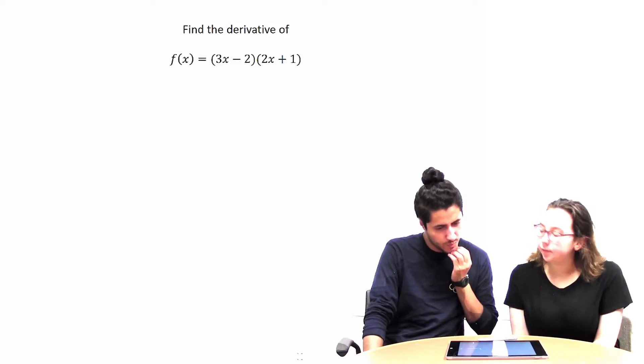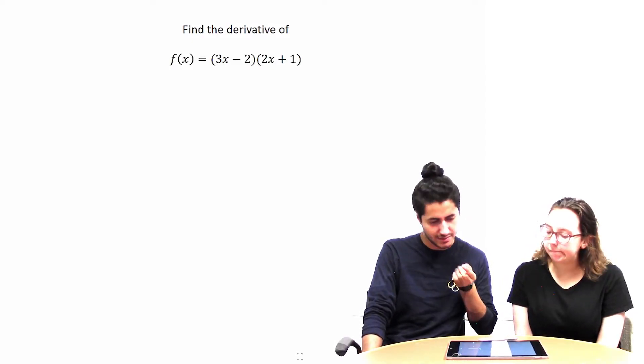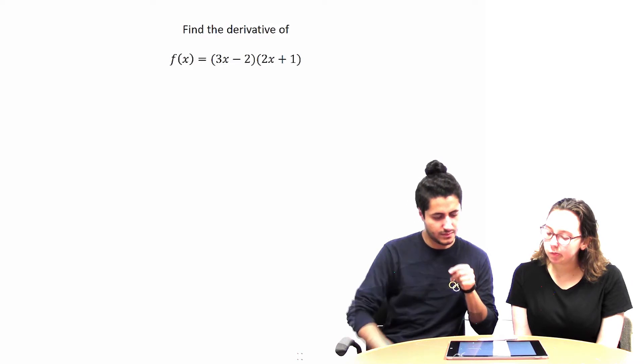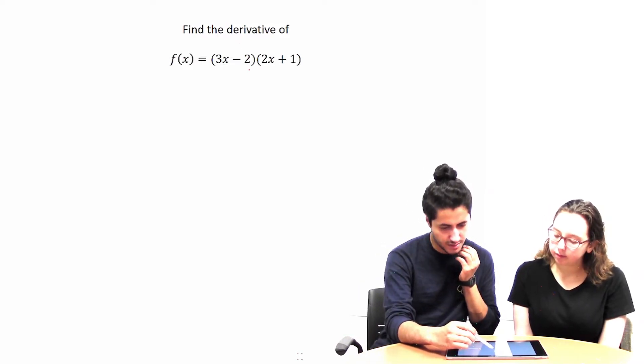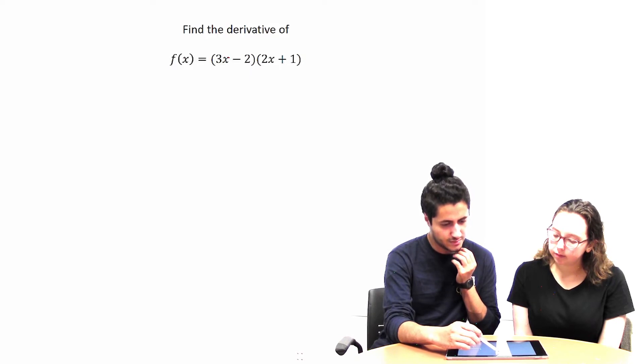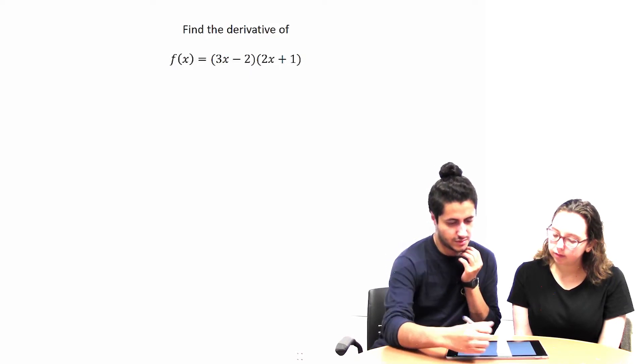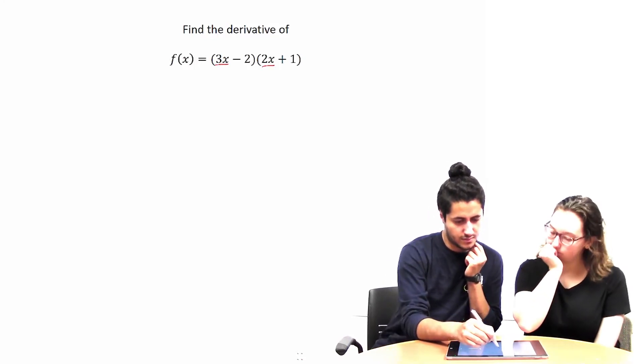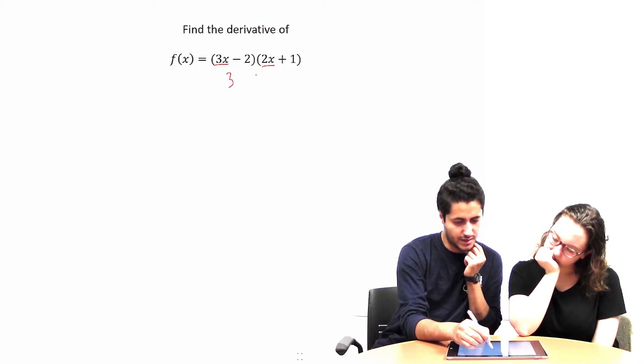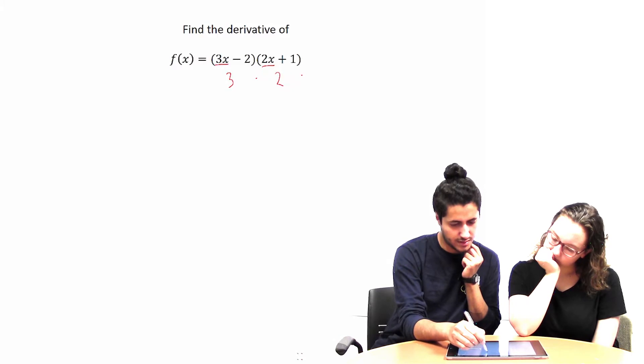So when we're finding the derivative, we would have to take... we know the constants go to zero, and then you would take the derivative of this piece and this piece. So then would you end up having three times two, and then that would get you six?